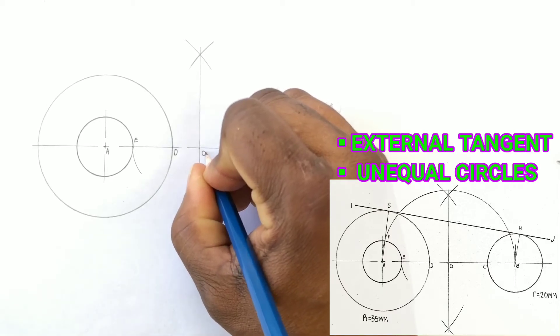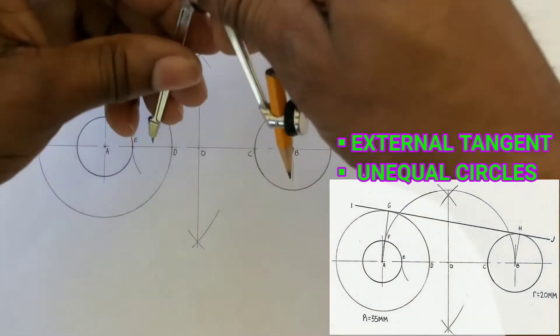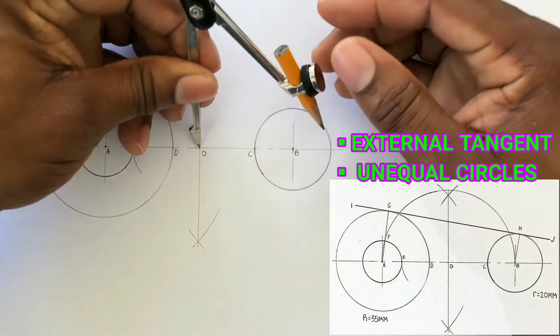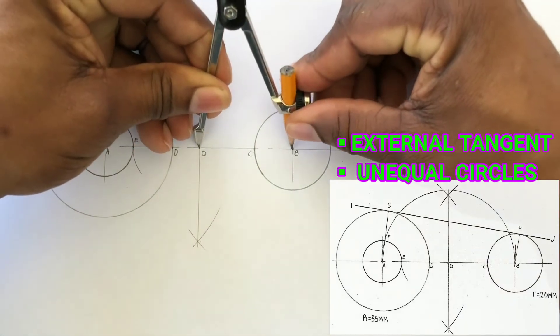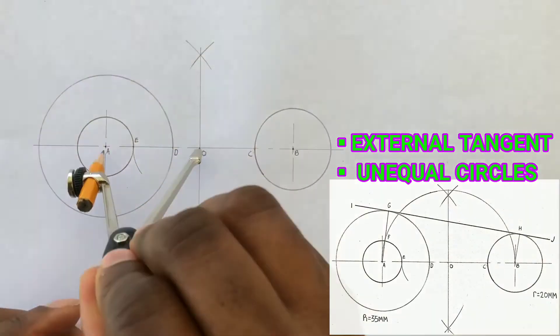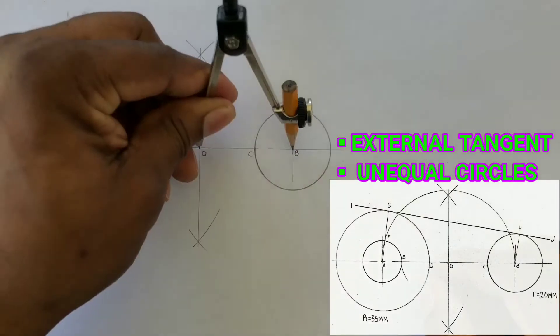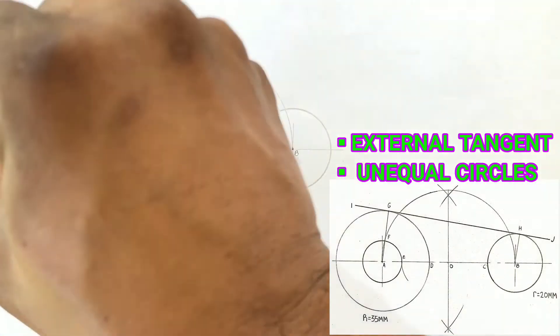Now open your compass from O to B or O to A and using the center as O and radius OB we will draw a semicircle.